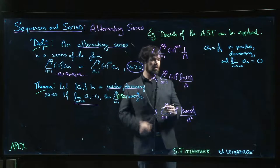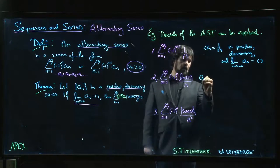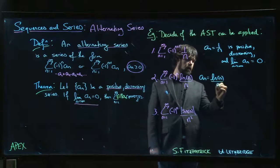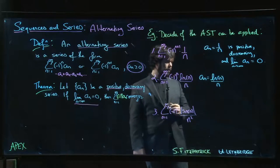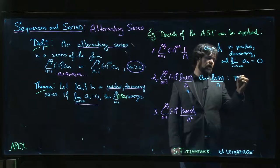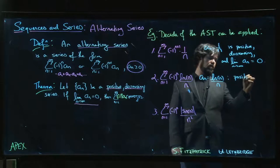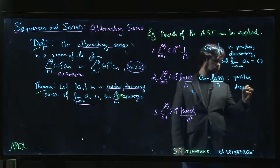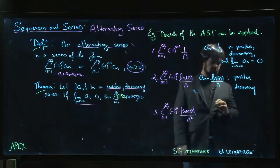What about this next one? Well, we've got the appropriate form. We've got the minus 1 to the n times log n over n, so a_n is log n over n. We need to check positive, check decreasing, and check the limit.